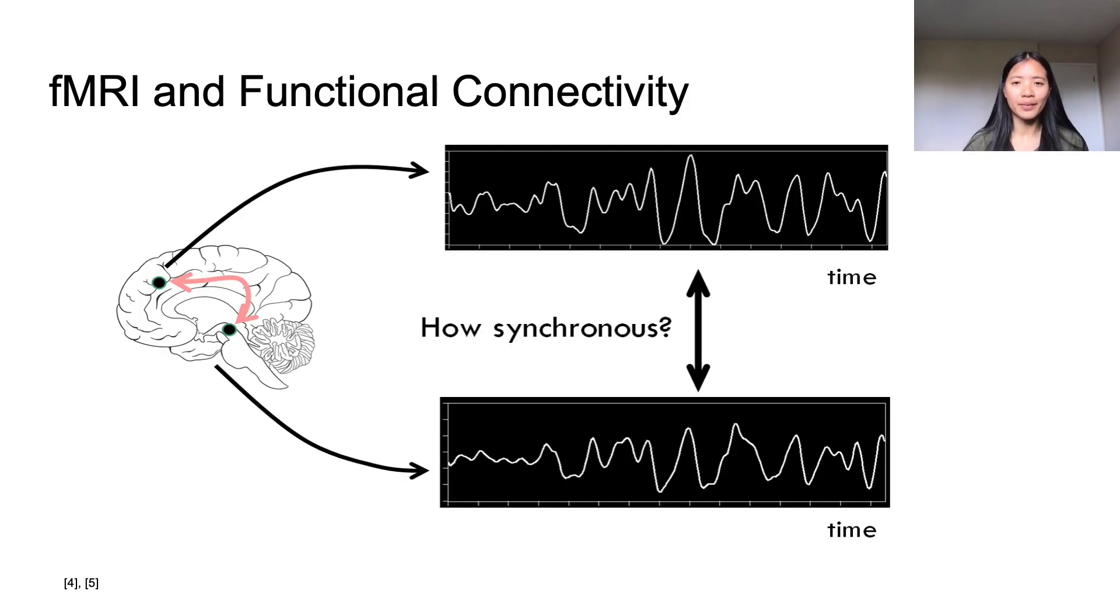What are fMRIs? Functional Magnetic Resonance Imaging, or fMRI, measures brain activity by detecting changes in blood flow in regions of the brain. Using fMRI and other neuroimaging techniques, we can analyze something called functional connectivity.